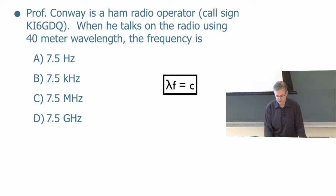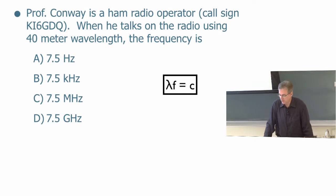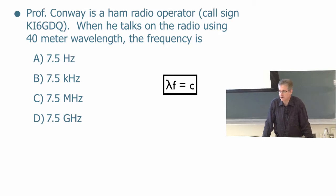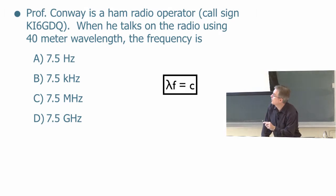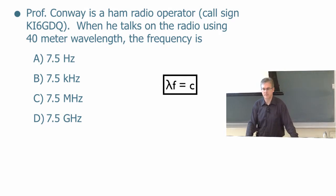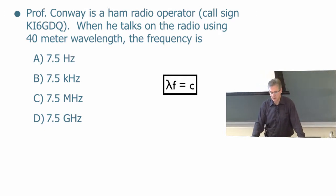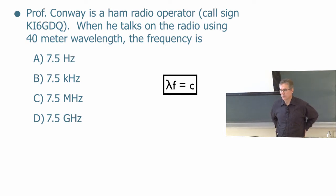So, let's do one clicker question. Professor Conway is a ham radio operator, call sign KI6GDQ. When he calls on the radio using 40 meter wavelength, what is the frequency? So, remember, speed of light C is 3 times 10 to the eighth meters per second. You can use your calculator. It's just an order of magnitude problem. Are we talking about hertz, kilohertz, megahertz, or gigahertz when we do that? Just to give you an idea, for very long radio waves, what is the frequency?